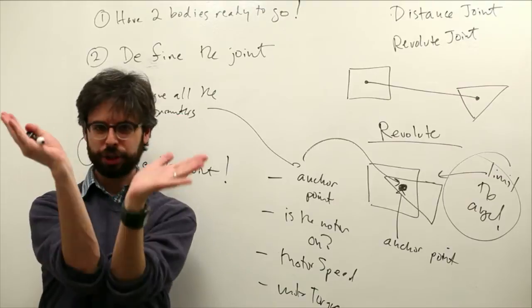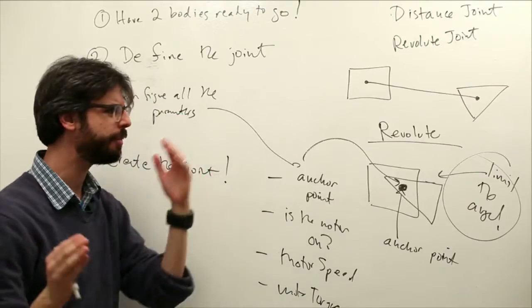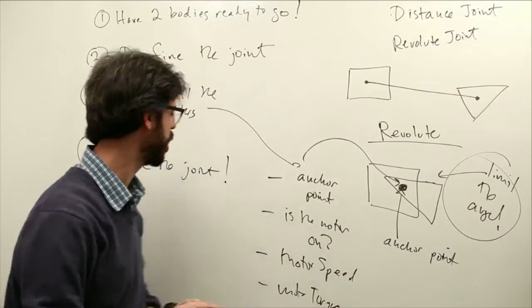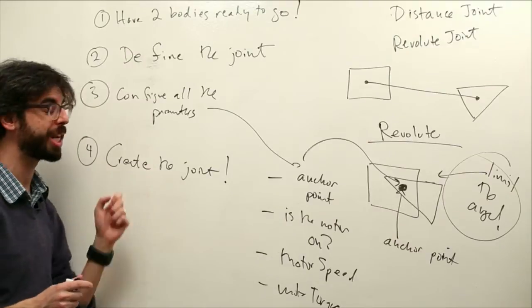Now we could also constrain the angle, we could turn a motor on and off, and we'll look at that stuff when we look at the actual code. And once we've set all that, we can create the joint.